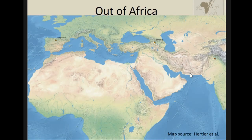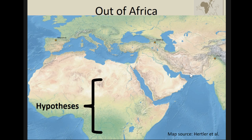The out-of-Africa theory holds that hominins dispersed out of Africa and across Eurasia. There are various hypotheses — for example, environmental changes, cultural changes, or changes in resource distribution — that try to explain this expansion. What we do in simulation is to formalize these hypotheses in order to compare them.